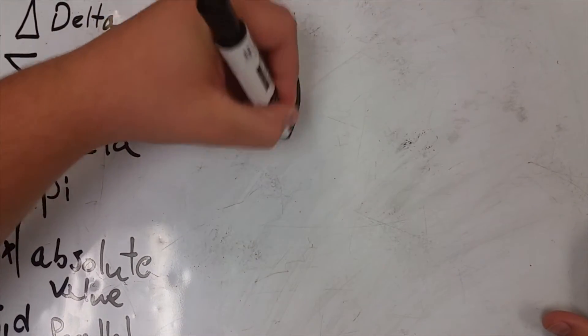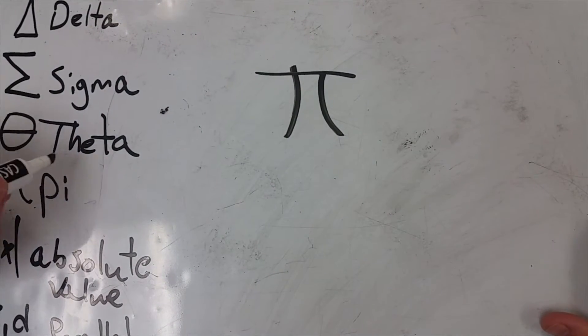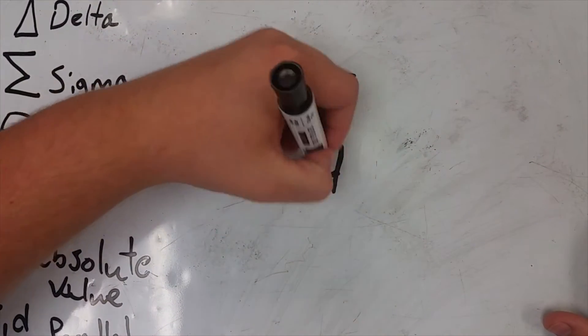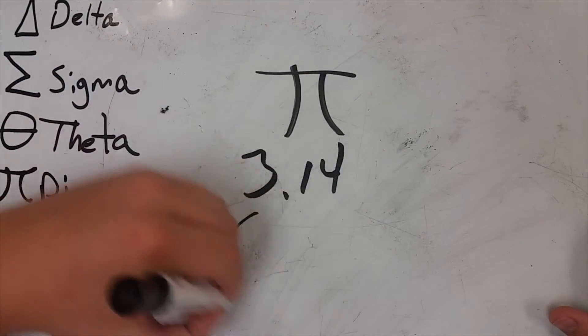The symbol we're going to go over is Pi. You probably have seen Pi because you're in physics, you've done math before. It stands for 3.14, and we have it for the same reasons that you have in math class for findings, circumference,